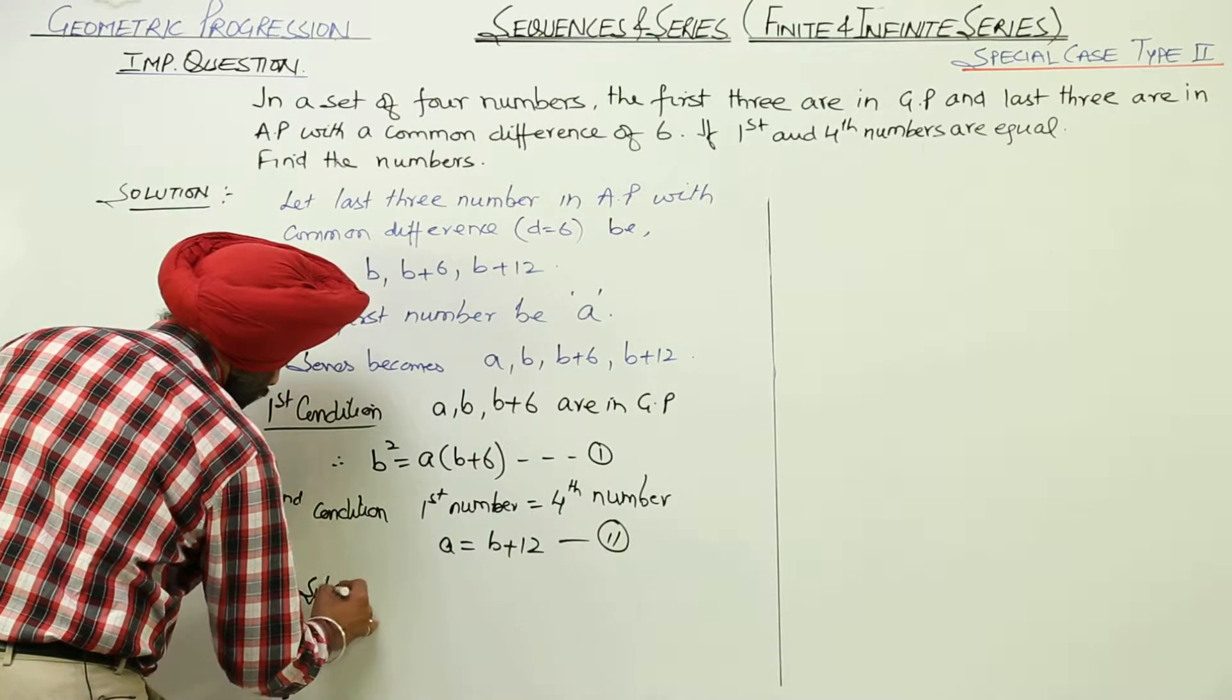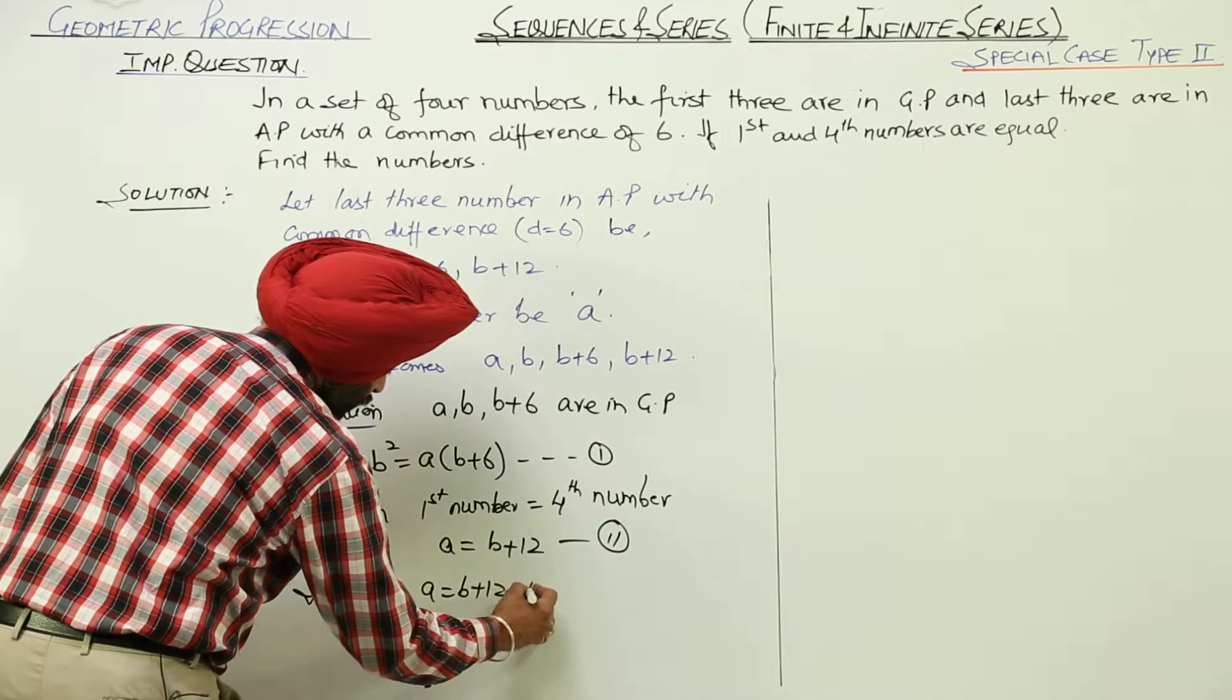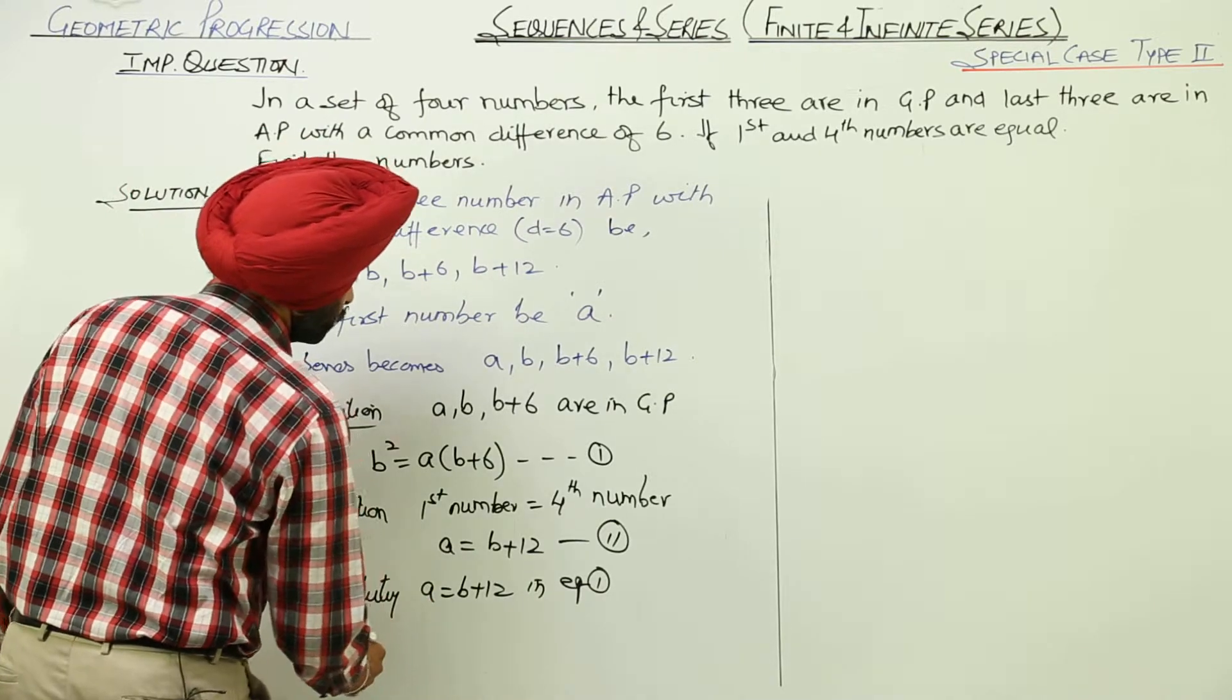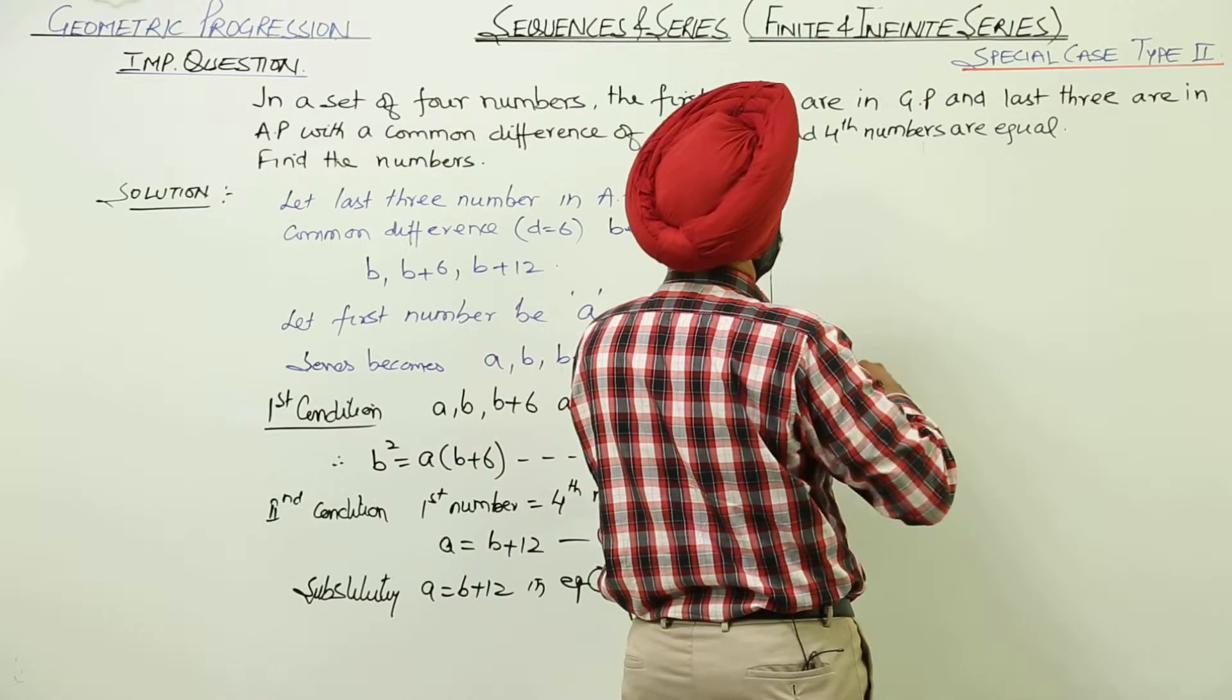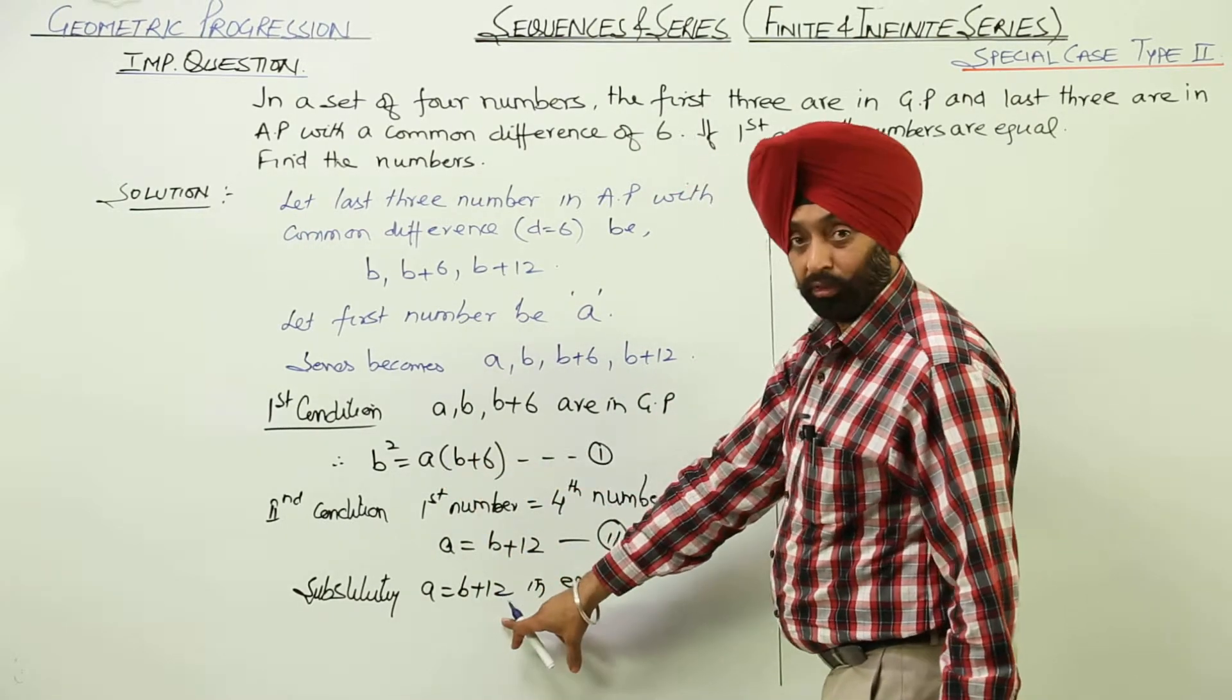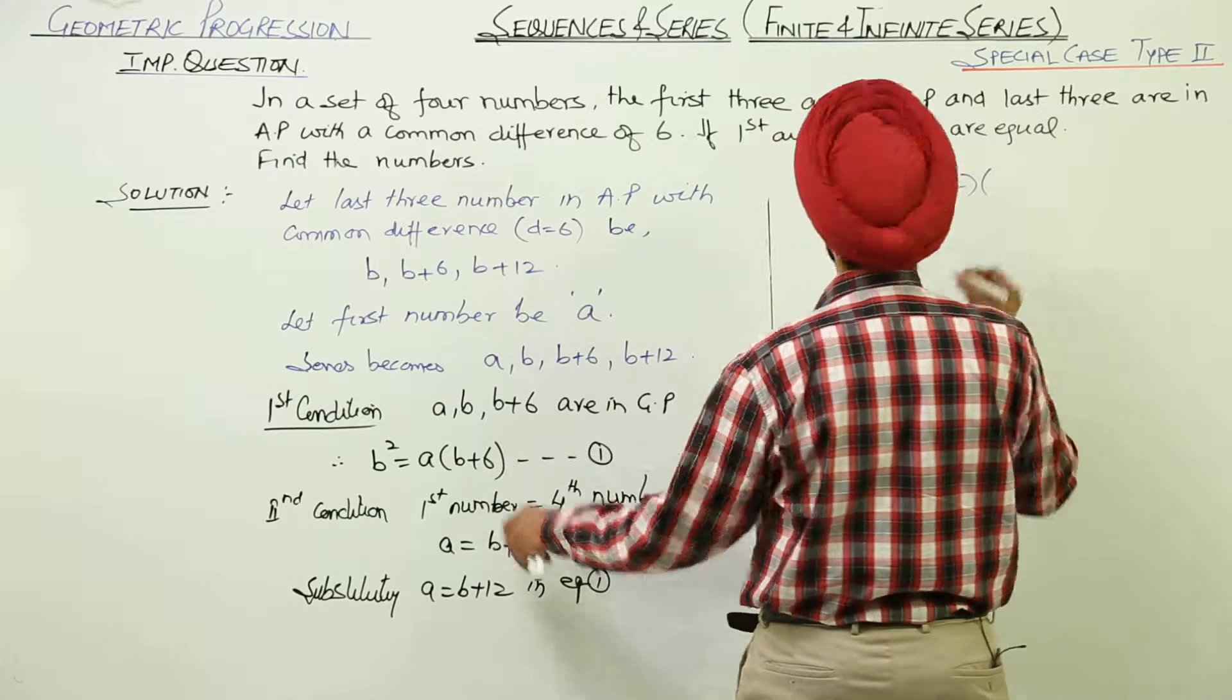Now, substituting A is equal to B plus 12 in equation 1 or you can write it solving 1 and 2. So, what we are having? B square is equal to... Now, in place of A here, we are putting B plus 12. B square is equal to B plus 12 with B plus 6.